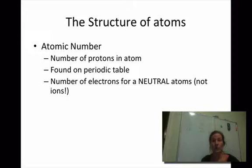If we're dealing with an atom that is neutral, meaning it does not have a charge, it's not what we call an ion, then this number will also represent the number of electrons, because if it's neutral, you need the same number of positive and the same number of negative charges.